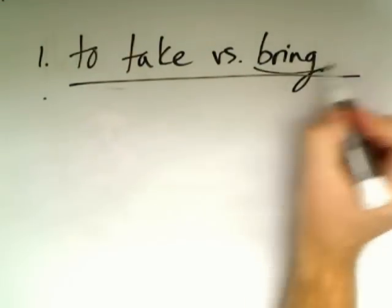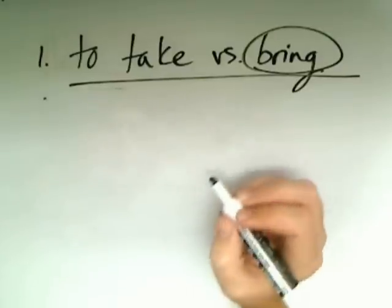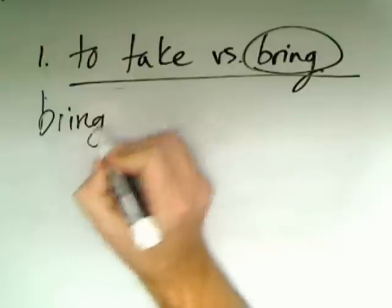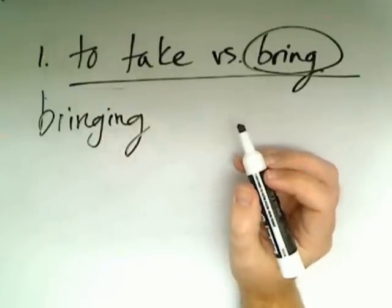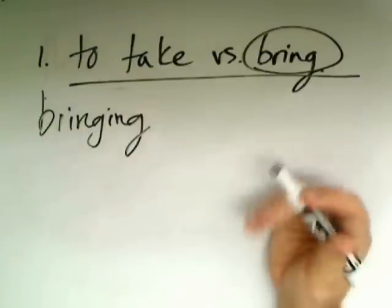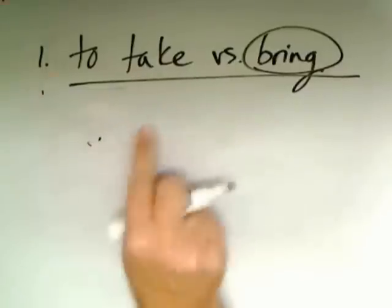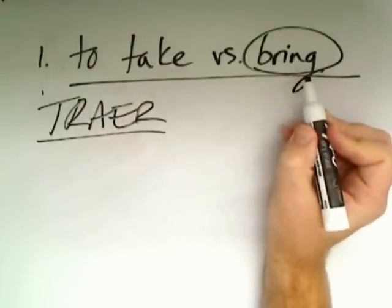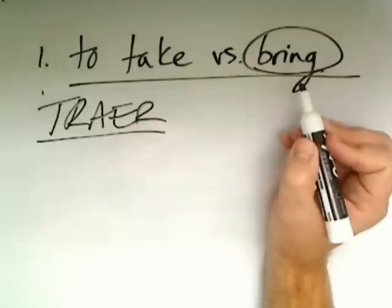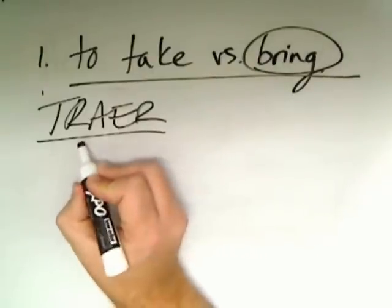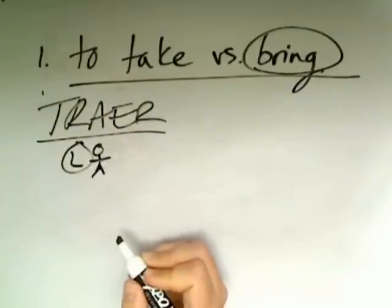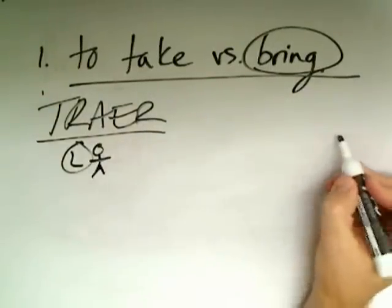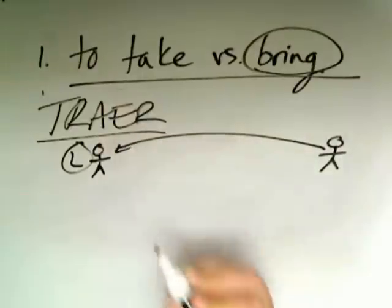Traer then has to do with bringing something to a location. Traer is bringing something to a location where you are present. So with traer, we are talking about someone bringing something to a location where you are present. Here's our location L — I'm here, the person speaking is here — and I'm talking about someone bringing something to where I am or where we are. To me that's the key distinction between take versus bring when we're talking about llevar y traer.